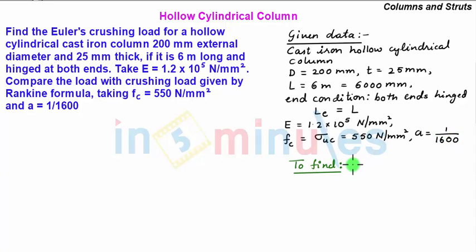In this problem we have been asked to find first the Euler's crushing load or crippling load PE, then second we also need to compare this load with the Rankine crippling load PR. So comparison will be made when we know this PR and we take the ratio of either PE by PR or PR by PE.